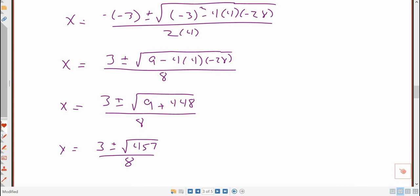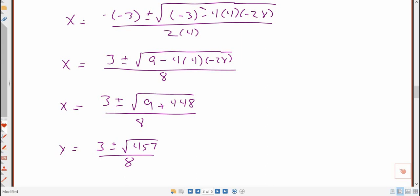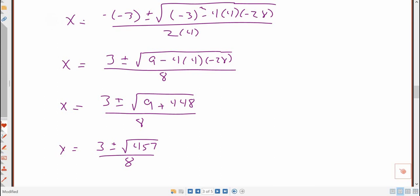Okay, so now I need to see if that square root simplifies any. And so I'm going to just do some scratch work off to the side over here and say, okay, well, when I simplify radicals, I always do the little factor tree thing. And let's see, 457, let's see, it's not divisible by 2, 3, 4, 5.